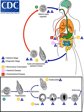Amoebiasis is an infection caused by the amoeba Entamoeba histolytica. Amoebiasis is sometimes incorrectly used to refer to infection with other amoeba, but strictly speaking it should be reserved for Entamoeba histolytica infection. Other amoeba infecting humans include: Dientamoeba fragilis, which causes Dientamoebiasis; Entamoeba dispar; Entamoeba hartmani; Entamoeba coli; Entamoeba polecki; Entamoeba bangladeshi; Entamoeba moshkovskii; Endolimax nana; and Iodamoeba butschlii. Except for Dientamoeba, the parasites above are not thought to cause disease.